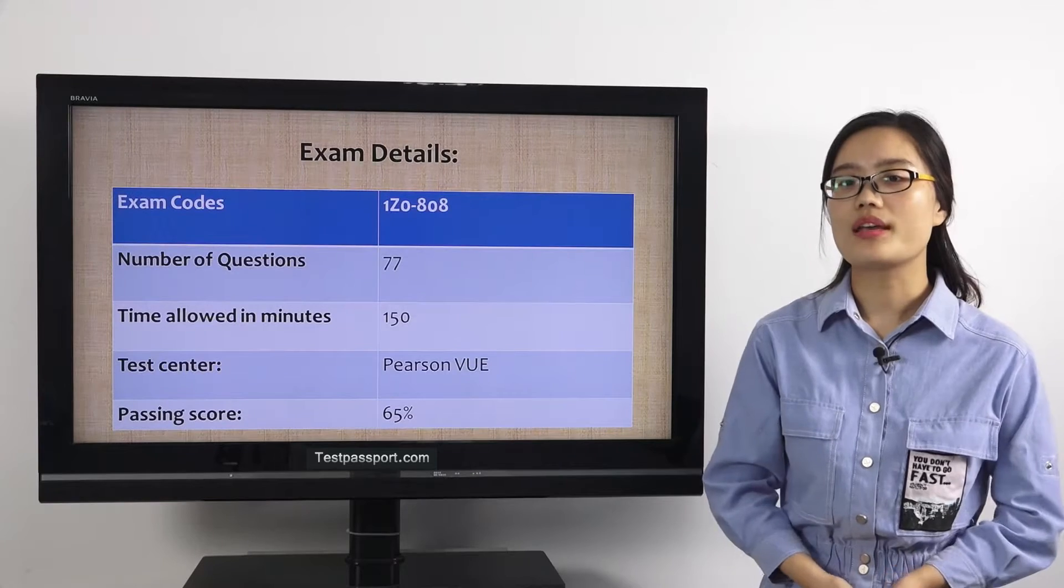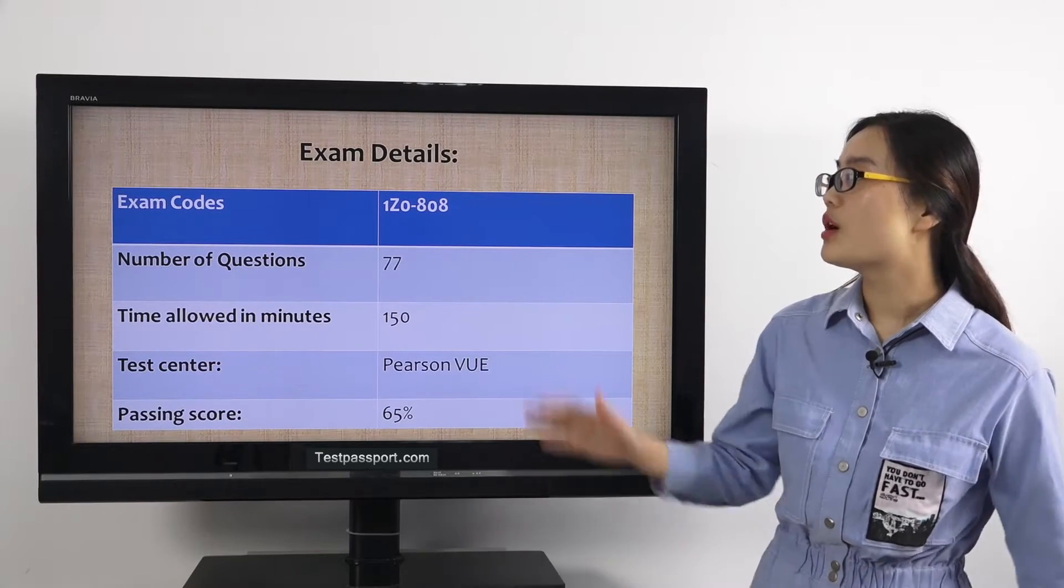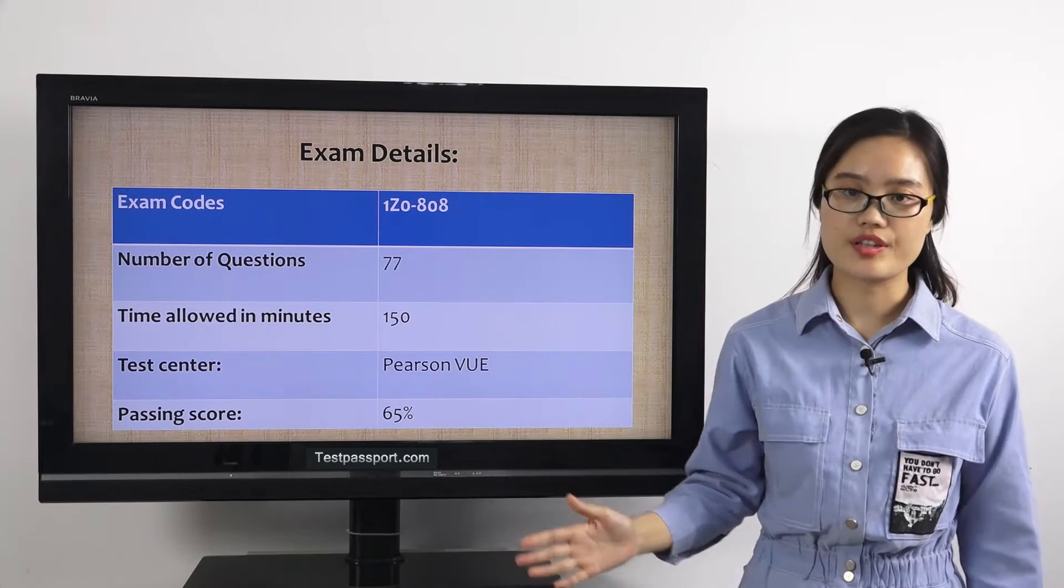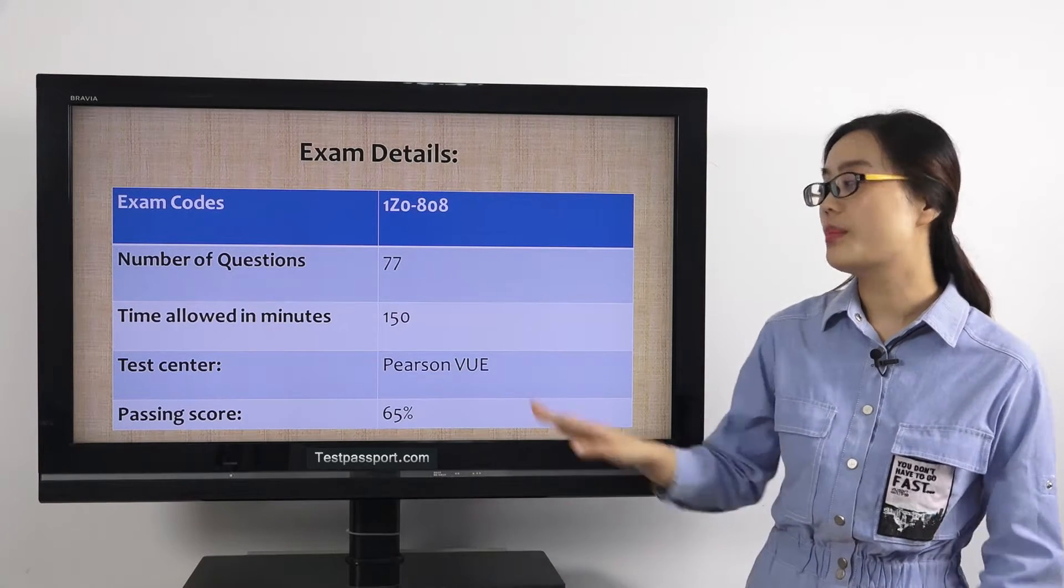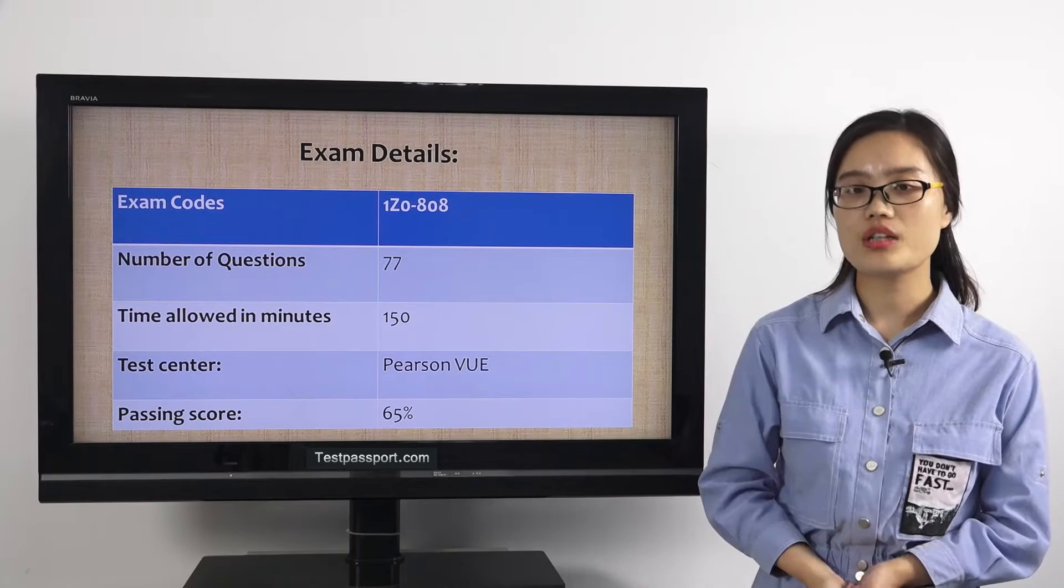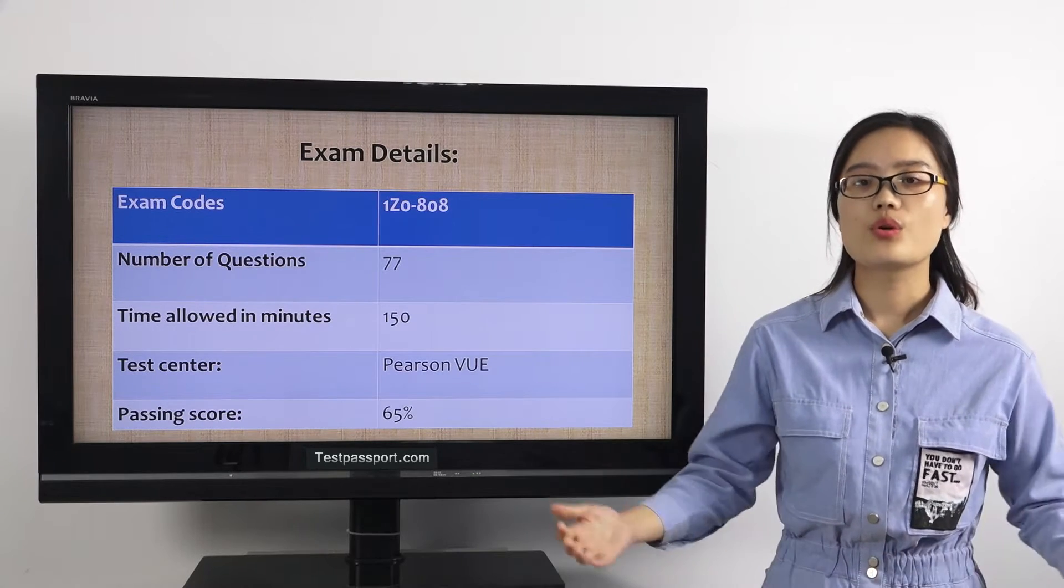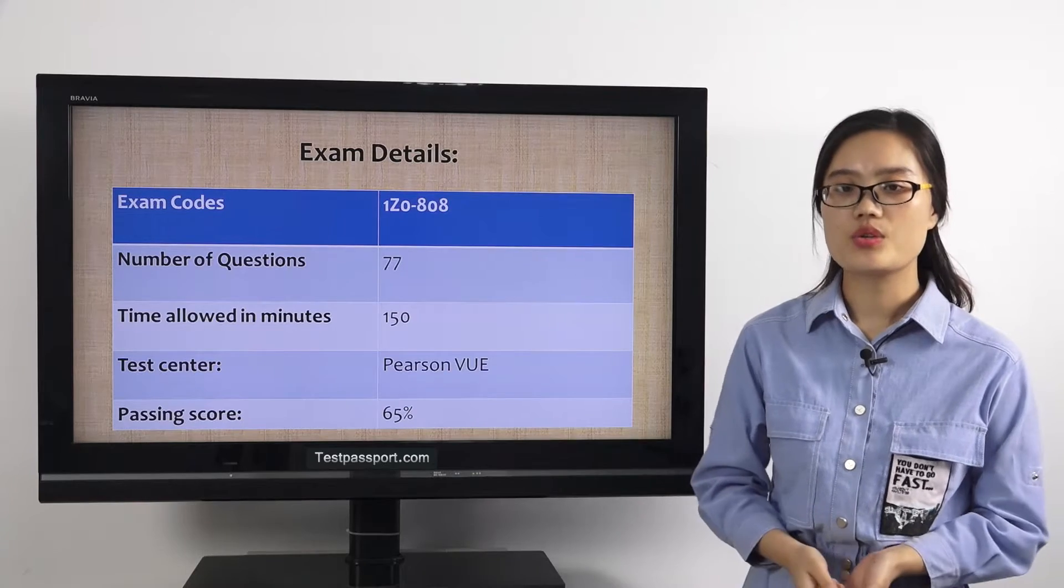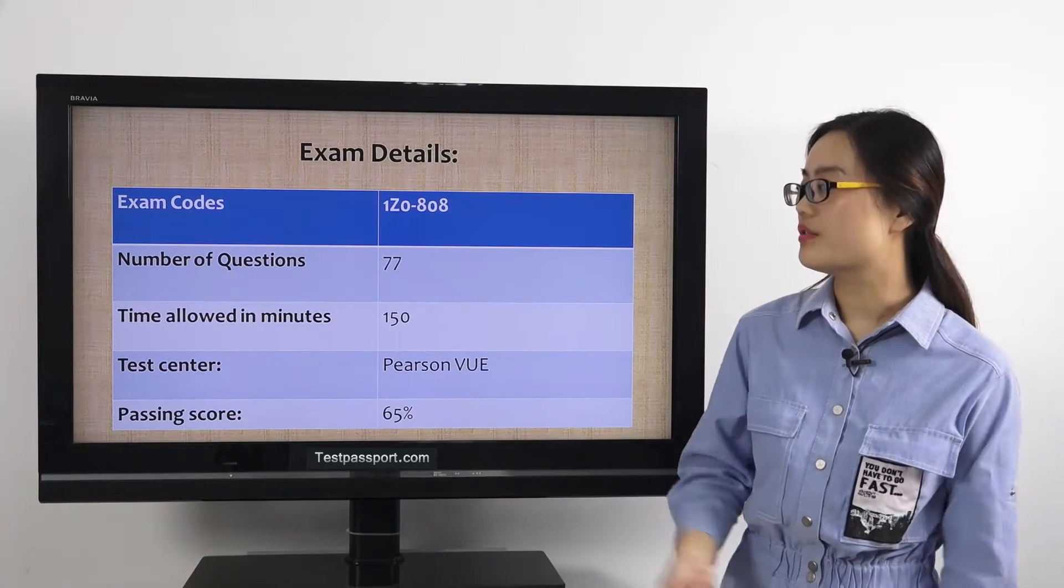Let's check part one, exam details. From this chart, you can see there are 77 questions in this exam, and you have to complete this test in 150 minutes. The required passing score is 65%. You can register this exam in Pearson VUE.